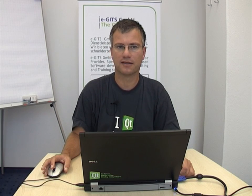So let's have a look at the CityEngine API. For instance, we have functions to get the city names, the countries, the population, the area, and some further information about the cities.